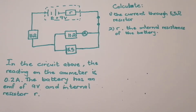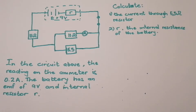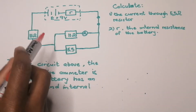Good day everyone. We meet yet again - I know you're still working hard preparing for those prelims and final exams, so I thought I'd give you this question as we prepare for circuits. Someone asked me to do more circuit questions, so here's a quick revision video. We're given a 9-volt battery; the reading on the ammeter is 0.2 amperes, and the battery has an EMF of 9 volts and an internal resistor r.